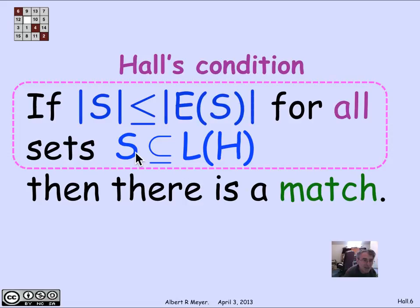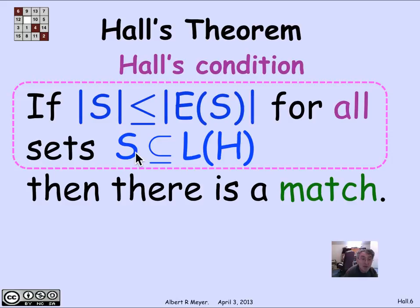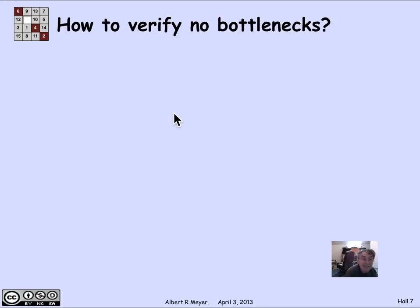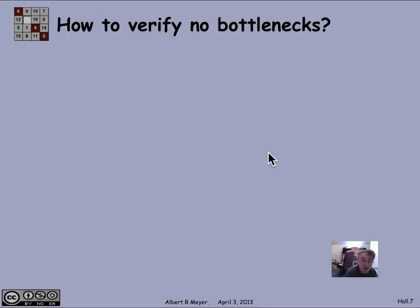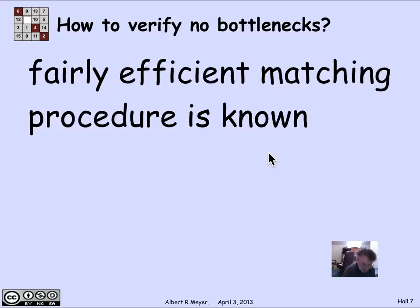We'll be comfortable going back to the boy-girl language since it's more memorable. But just for the record, we've now formally defined bipartite graphs, matches in bipartite graphs, and Hall's theorem — that there is a match when Hall's condition is satisfied. The puzzle is: how do you verify there are no bottlenecks? It's pretty hard. The bottleneck condition involves checking every subset S of L(H), and there are exponentially many subsets relative to the size of the graph.